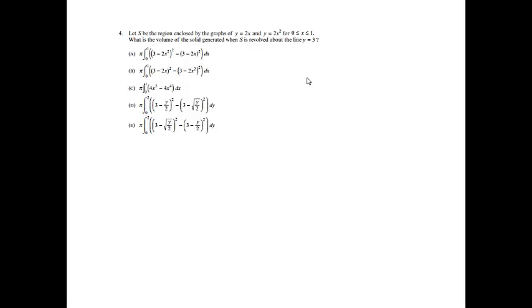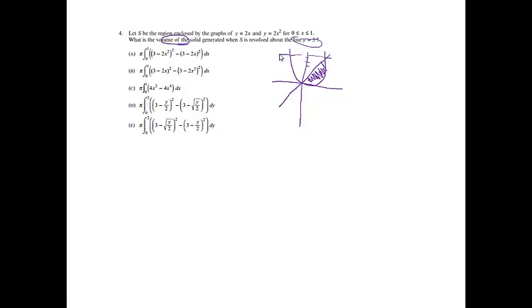Number 4: let S be the region enclosed by y = 2x and y = 2x² between 0 and 1. What is the volume of the solid generated when S is revolved about y = 3? The line y = 2x goes through the origin, and y = 2x² is a parabola. Since we're revolving about a horizontal axis and there's a gap, we use the washer method.